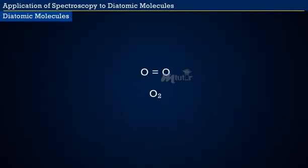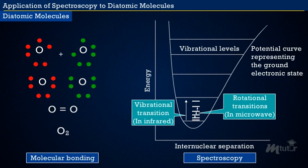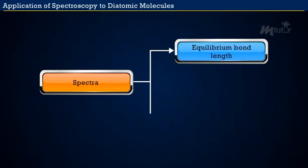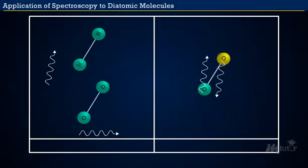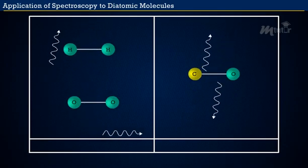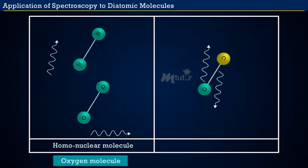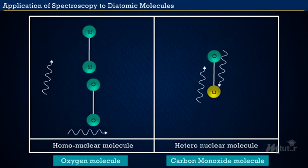Diatomic molecules are valuable test cases for understanding molecular bonding and spectroscopy. Because a diatomic molecule is necessarily linear and has only one vibrational mode, its vibration-rotation spectrum is relatively simple. The equilibrium bond length, rotation constant, and harmonic vibration frequency are easily obtained from the spectra. If a diatomic molecule cannot interact with IR radiation, like hydrogen and oxygen, it is homonuclear. If it consists of two different atoms such as carbon monoxide, it is heteronuclear and IR active.